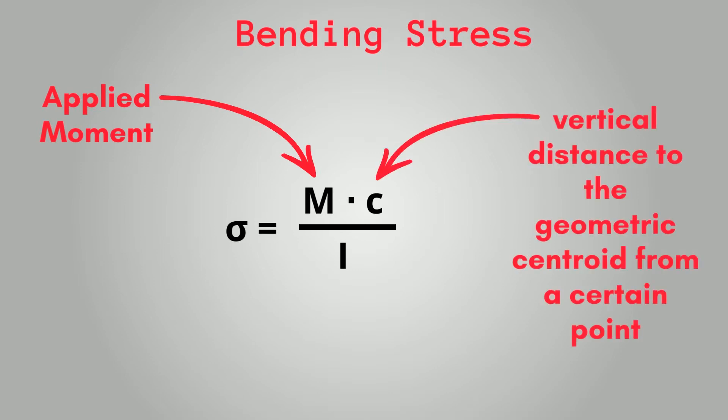Similarly, the bending stress, sigma, is defined by this equation. Where M is the applied moment, C is the vertical distance to the geometric centroid from a certain point, which is usually half the height of the section for most structural engineering applications, and Ix is the area moment of inertia.